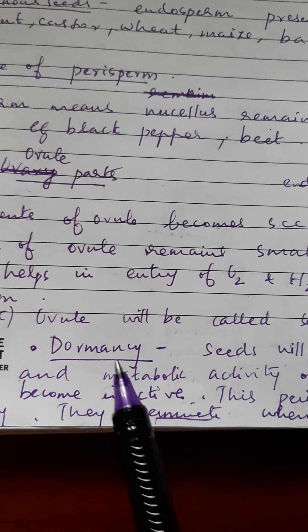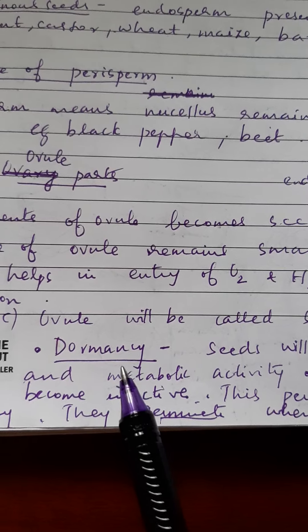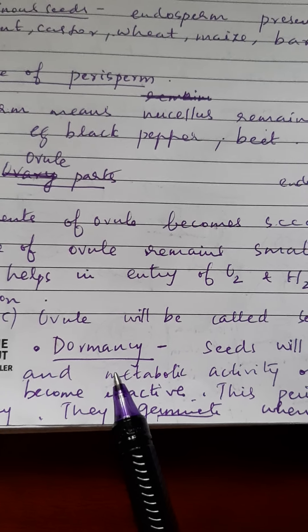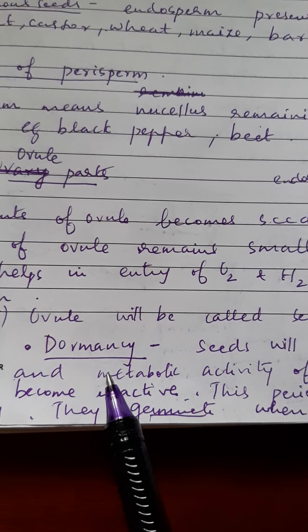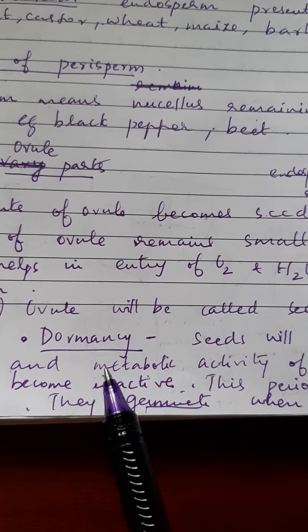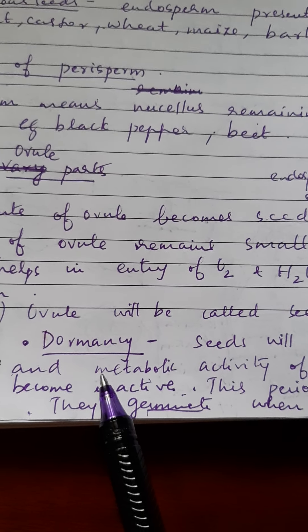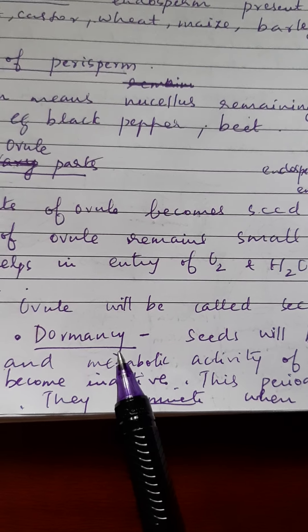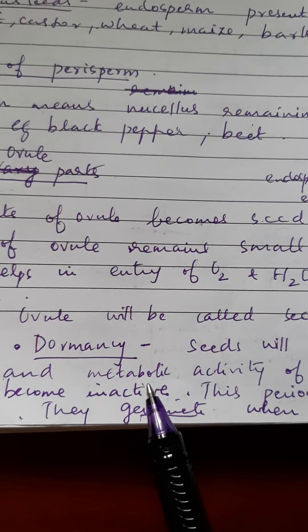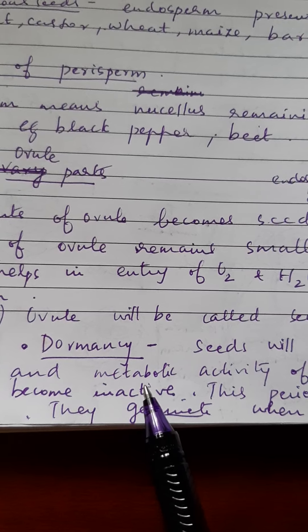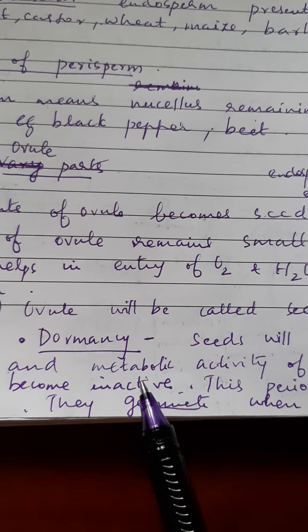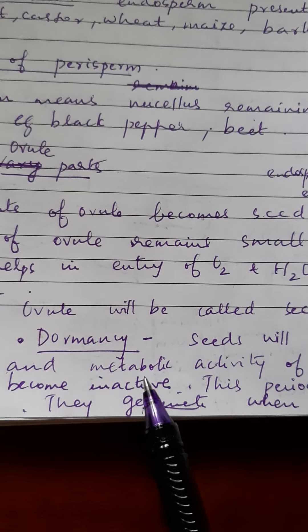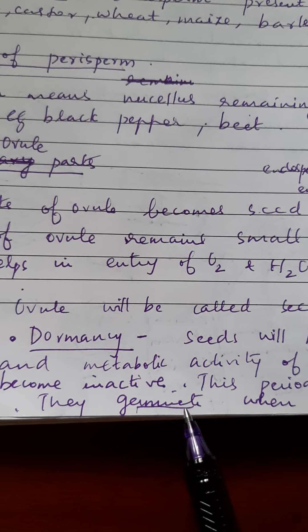Dormancy - seeds show a property called dormancy. During unfavorable situations, the embryonic activity of the seed will reduce and it will remain inactive. This period is called dormancy period. And when the seeds receive the favorable situations in the form of oxygen, moisture, temperature, then they can break the dormancy and they will germinate.